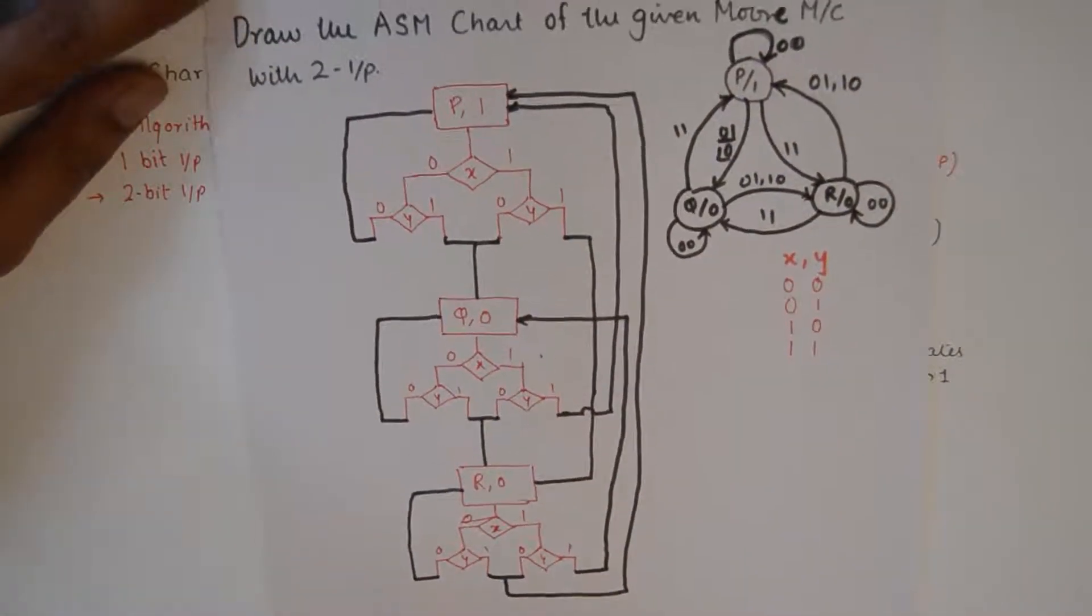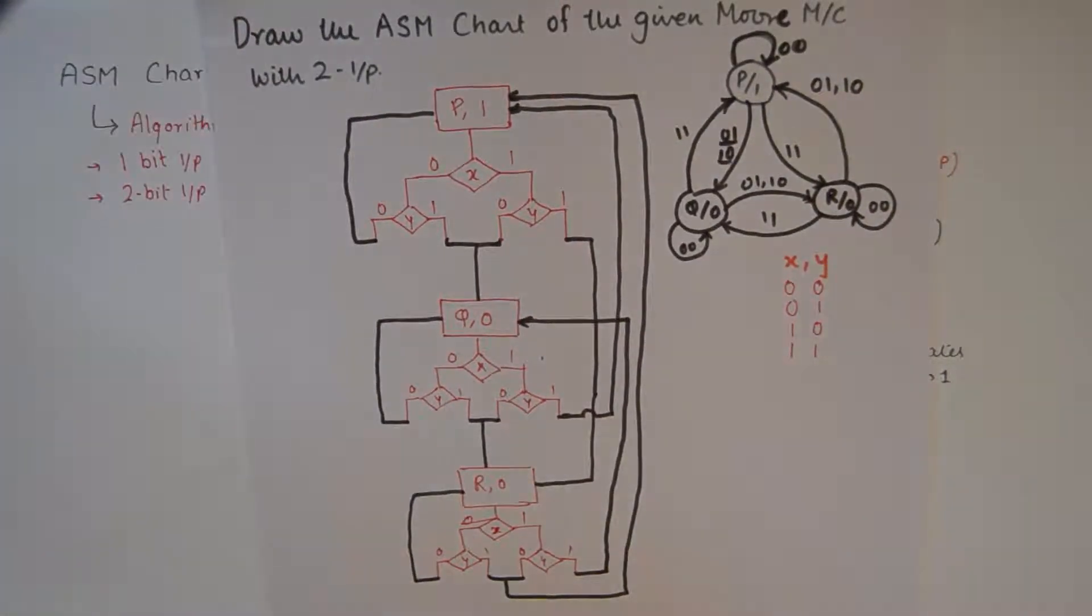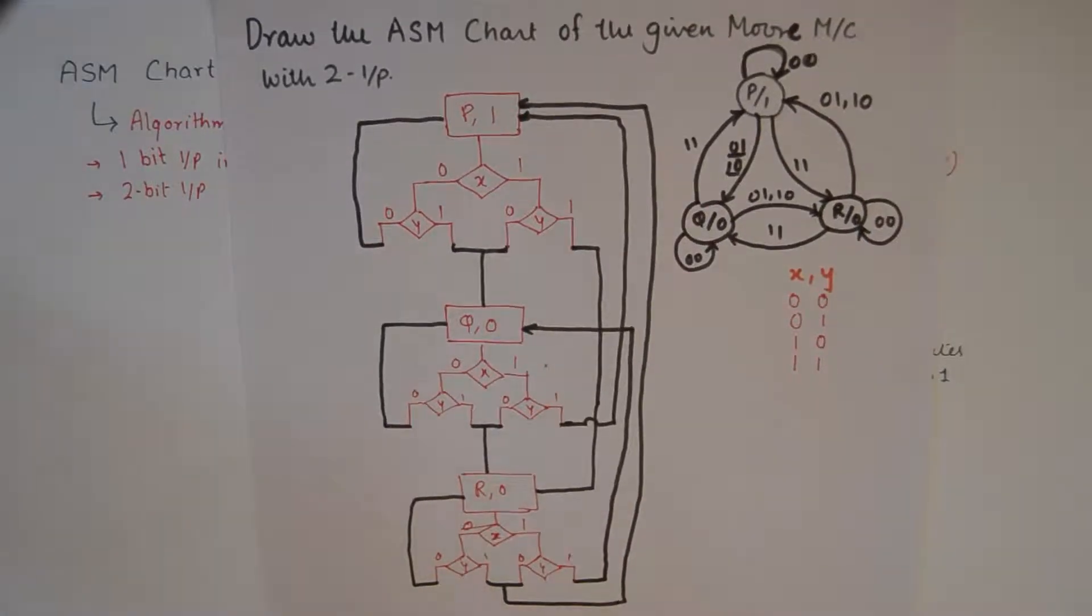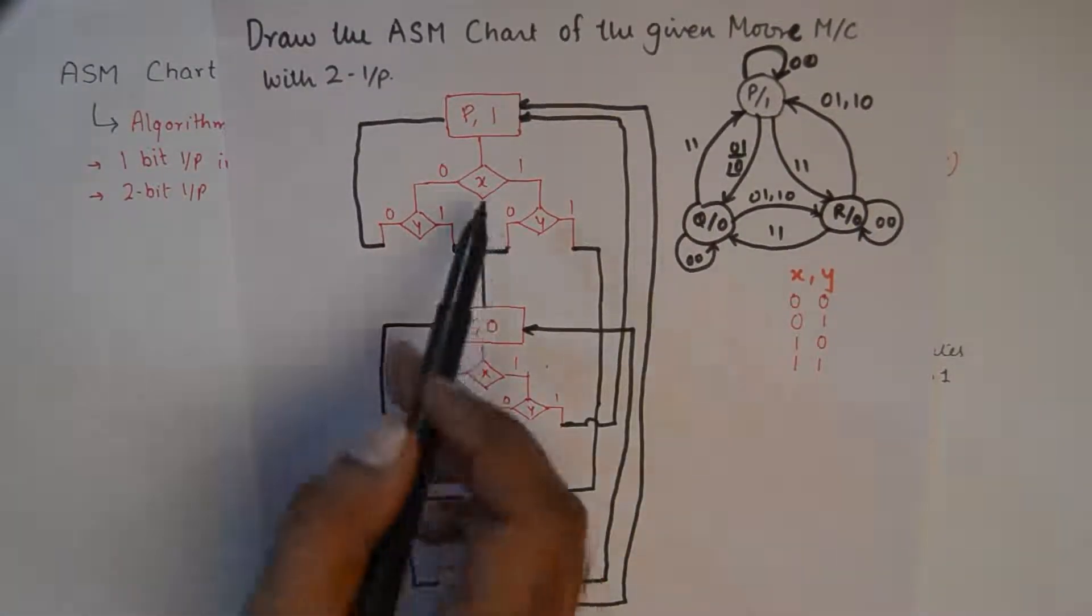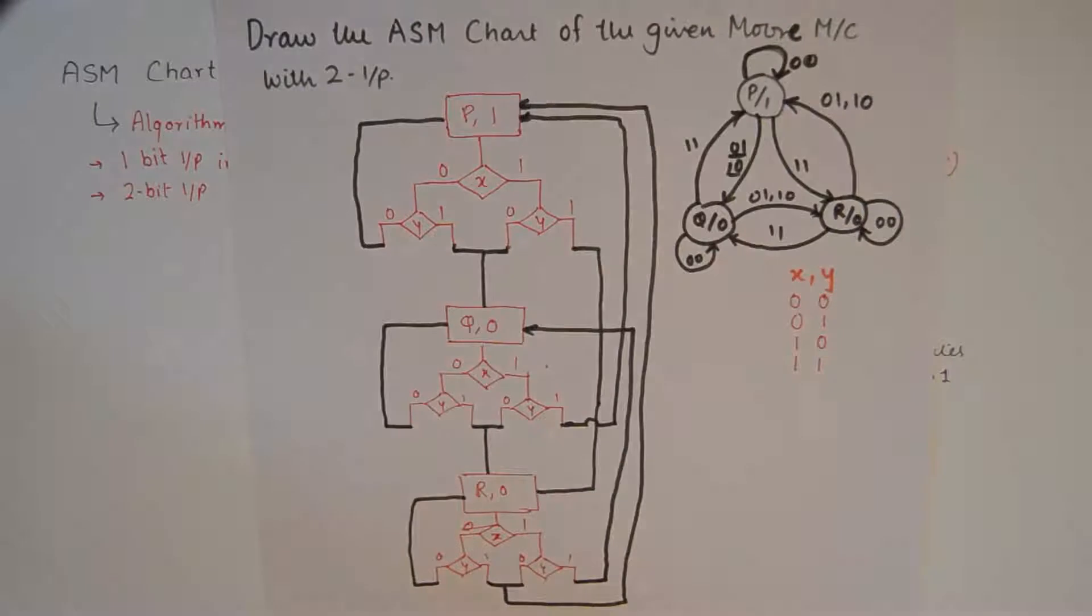So that is how the ASM chart for a 2 bit input for a Moore machine is drawn. It is pretty simple once you figure out this logic of x and y's relation with each other as input. And I hope this tutorial was of help. If you liked the content give it a thumbs up, consider subscribing to the channel. I will see you in the next video, take care and bye bye.